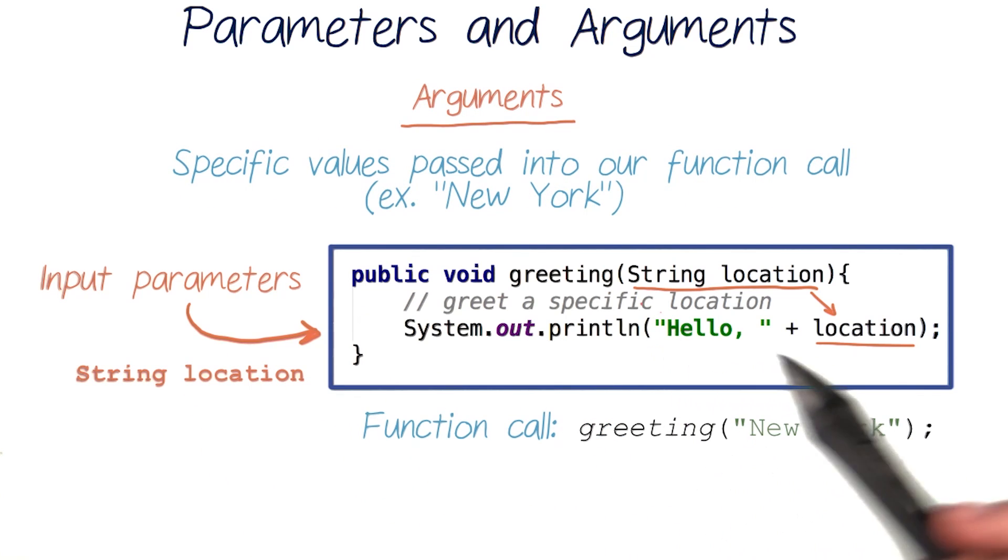So parameters are the variables inside our function definition, like string location. And arguments are the actual values that are passed into our function when we call it, like New York, which our function needs to work.